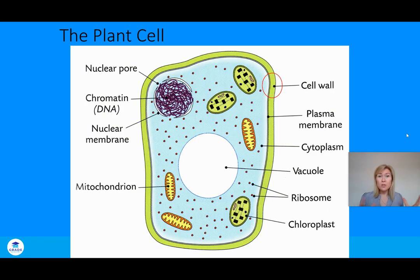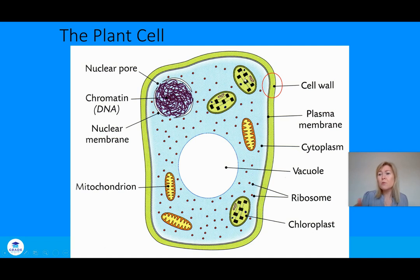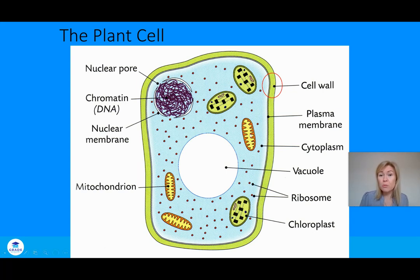Animal cells have less in them than a plant cell, so when we explore the plant cell we cover all the organelles needed for the Leaving Cert course. We're going to work from the outside in, building up what each organelle is responsible for. For example, a chloroplast is responsible for photosynthesis, and mitochondria are the site of respiration. The first structure we start with on the outside is the cell wall.